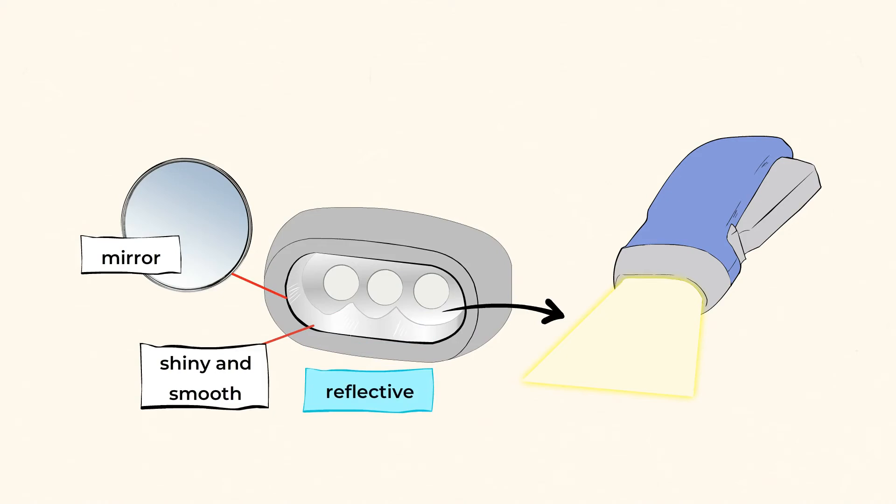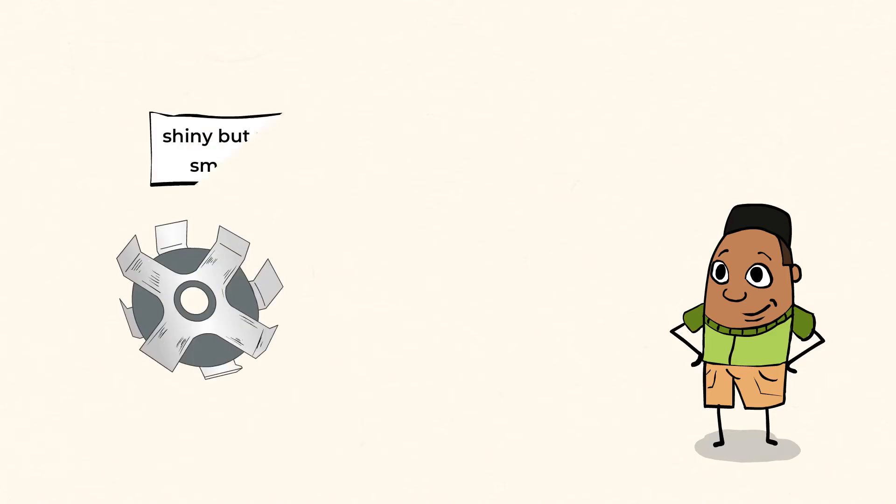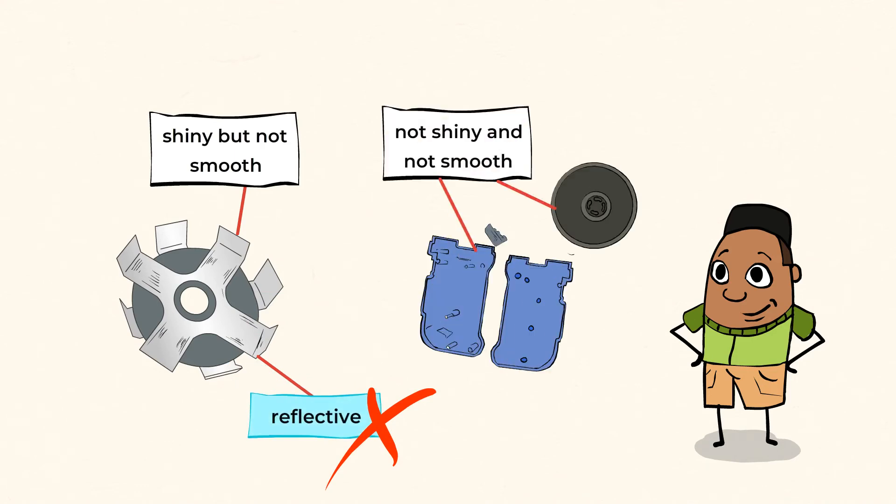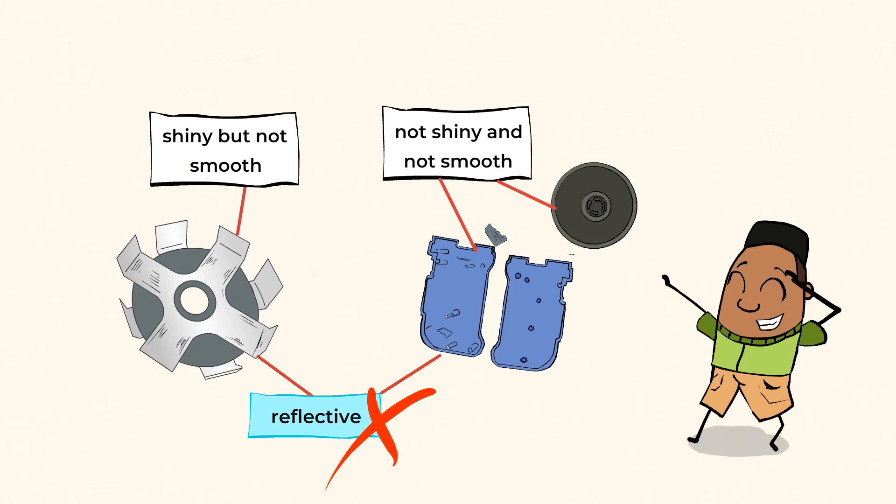And some of the other metal parts are shiny, but they're not so smooth. And so that would mean that they're not as reflective. And then there are also pieces that are not shiny at all and don't have any reflective properties like these pieces over here. Making good progress.